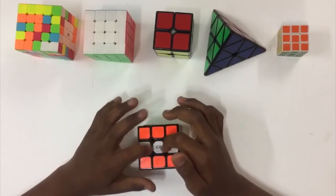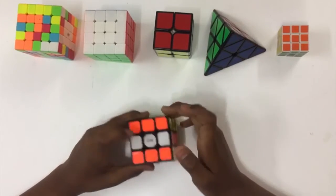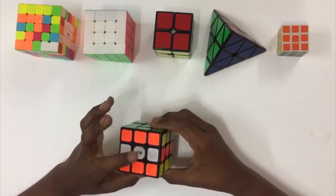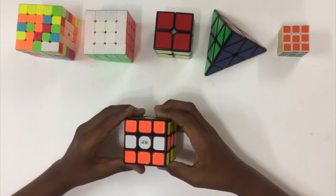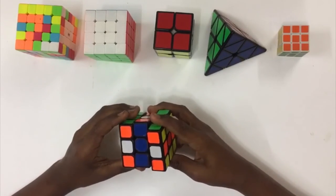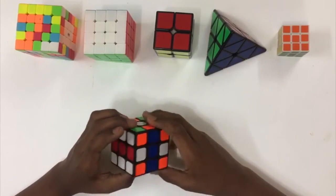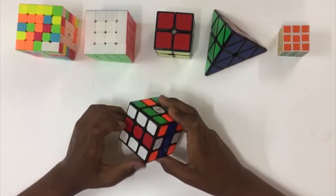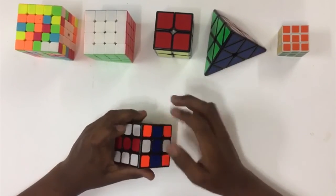And then misplace the white center piece by doing one turn, and just match these edge pieces back to the white.